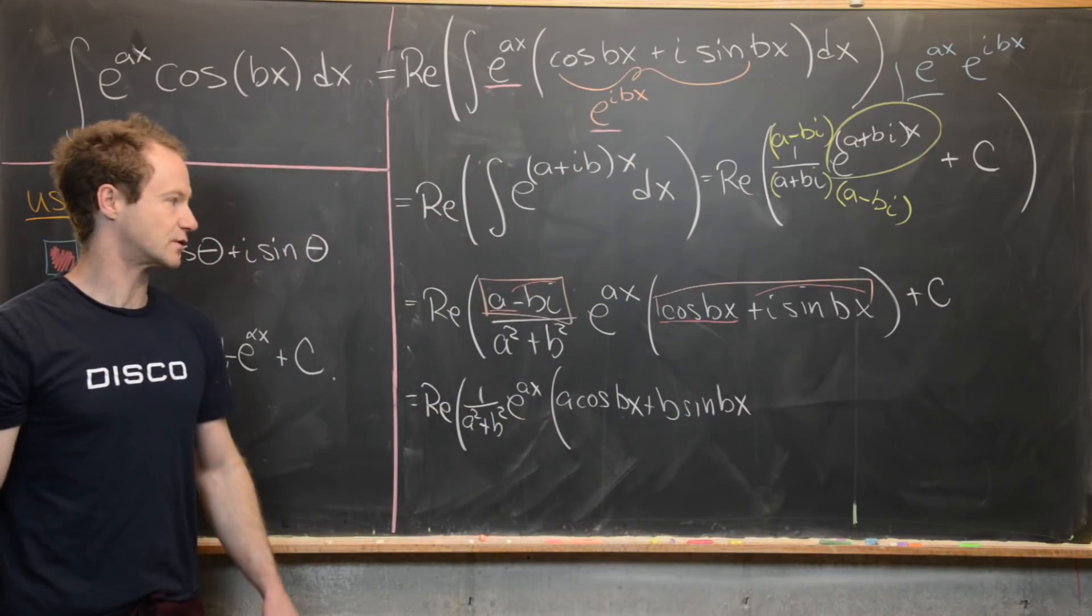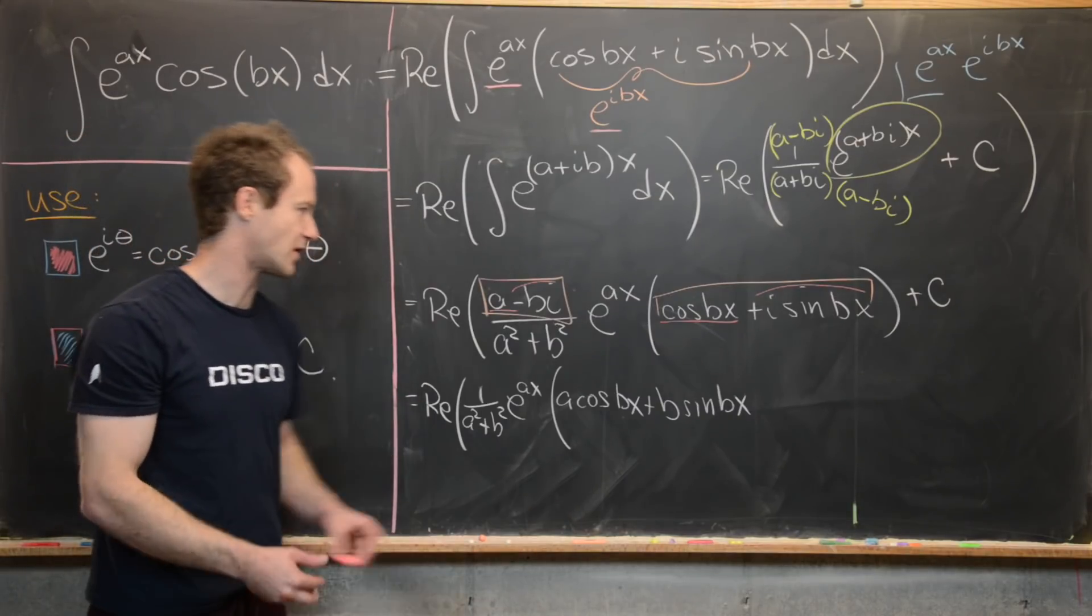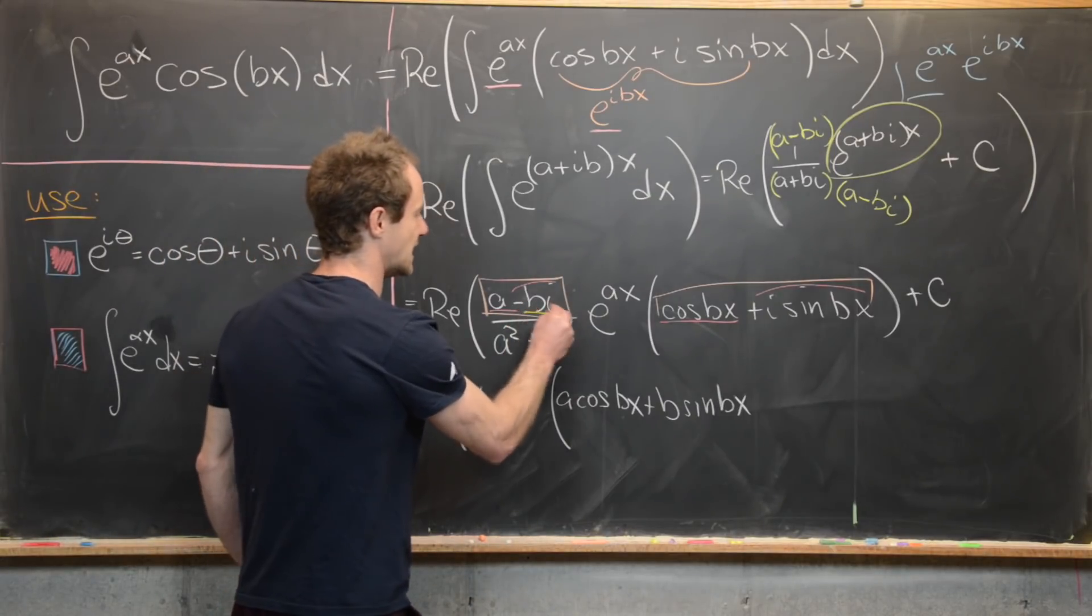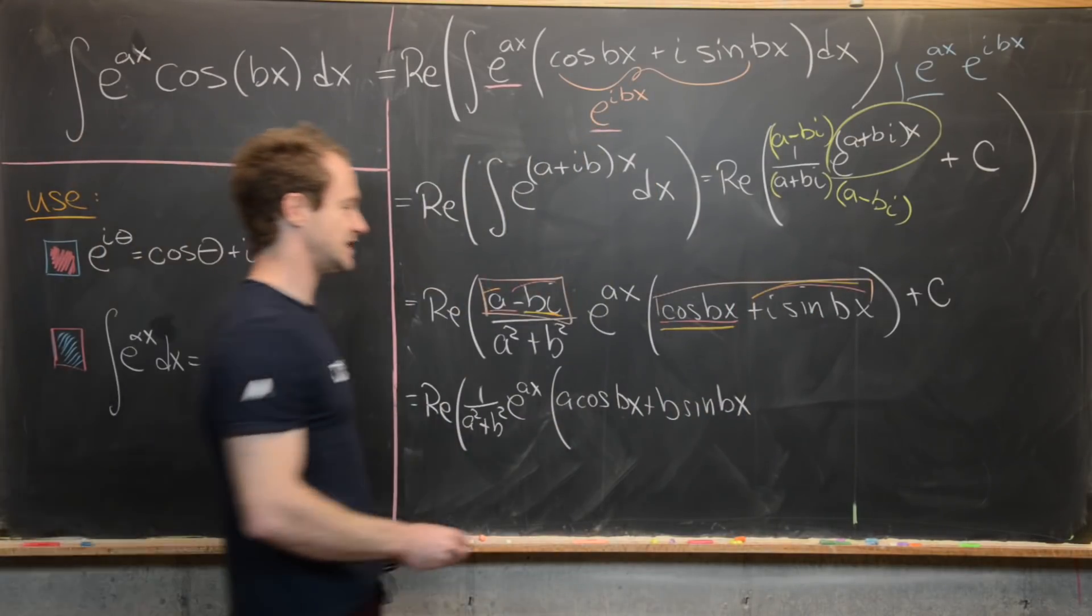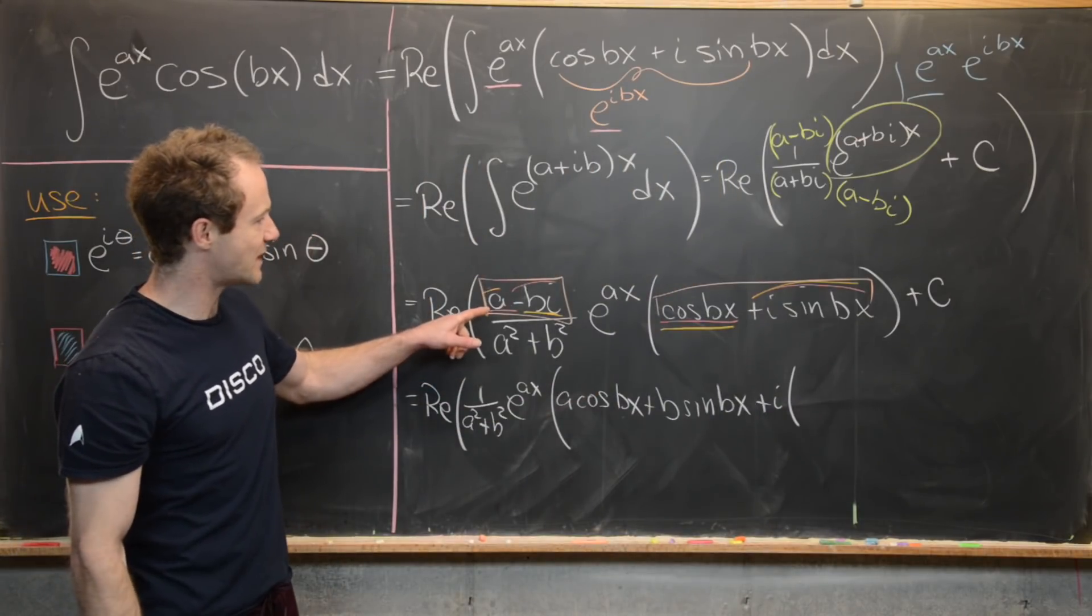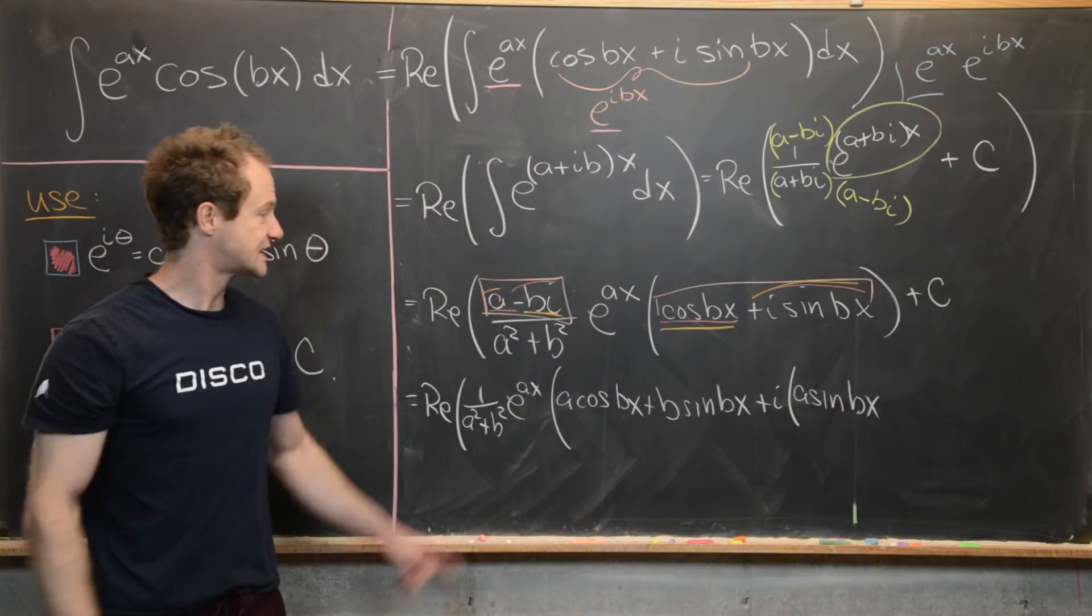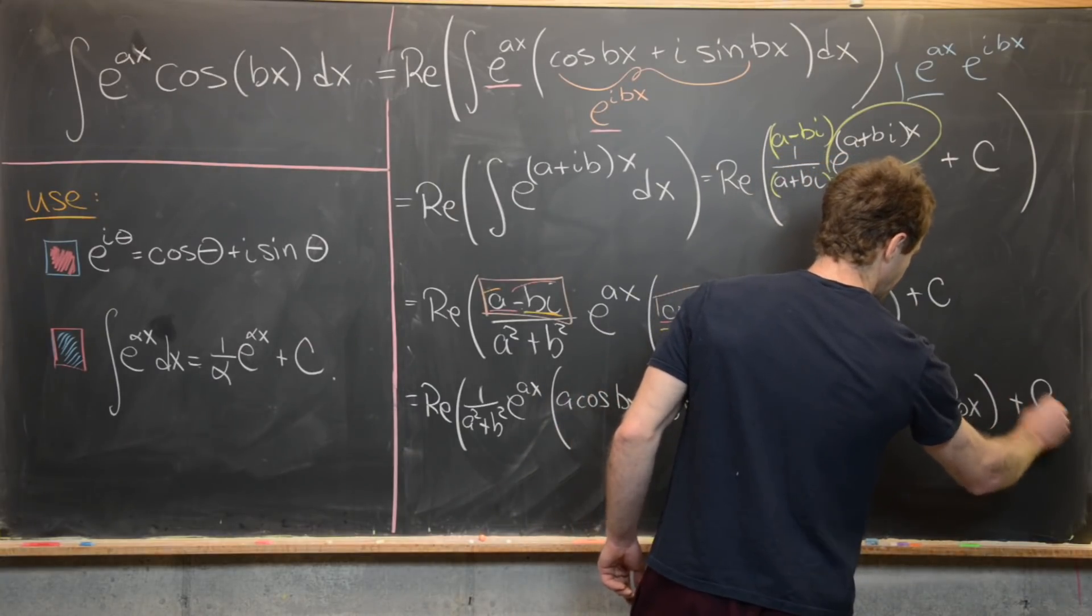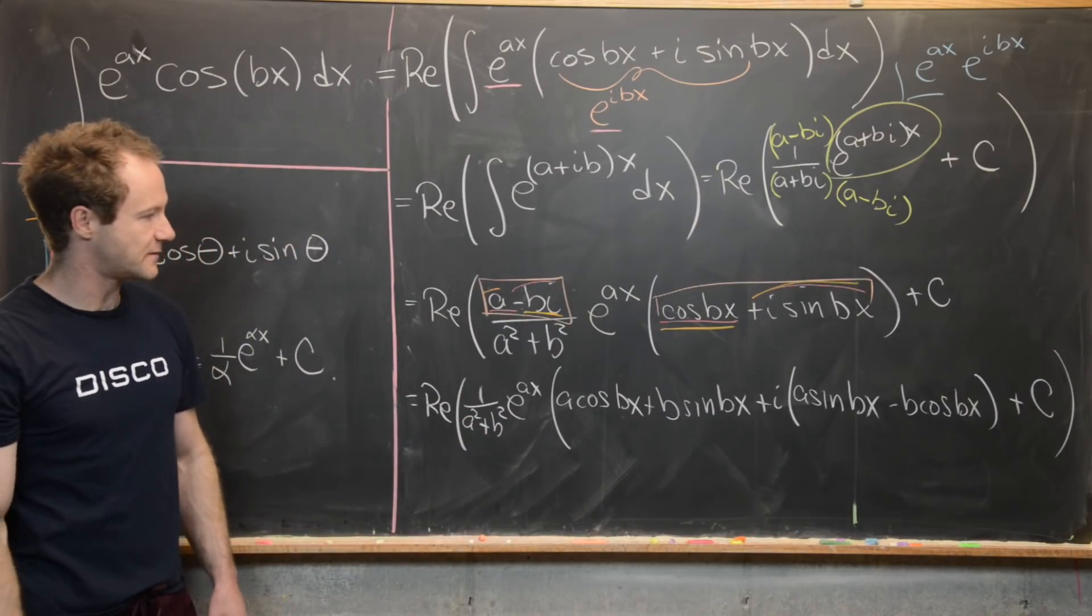We only want the real part, so that's all we really want. But just for completeness, let's look at the imaginary part as well. We will get the imaginary part by taking this bi and multiplying this cosine and this a and multiplying this i·sine. So we have plus i times the quantity, maybe the first one we'll have is a·sin(bx). And then the next one we'll have -b·cos(bx). And then finally plus a constant.